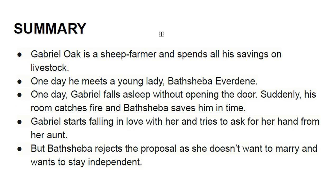Moving towards the summary of the novel. Gabriel Oak is a sheep farmer who spends all his savings on livestock. One day he meets Bathsheba Aberdeen. One day Gabriel falls asleep without opening the door, his room catches fire, and Bathsheba saves him in time. Gabriel starts falling in love with her and tries to ask for her hand from her aunt, but Bathsheba rejects the proposal as she does not want to marry and wants to stay independent.